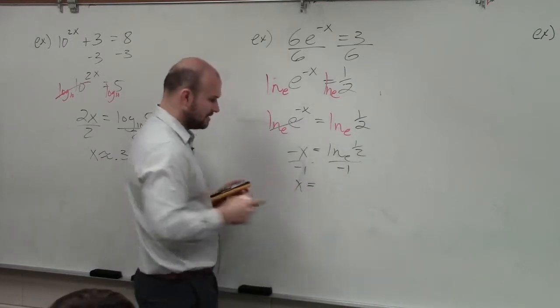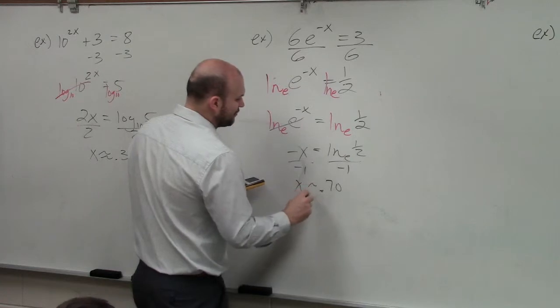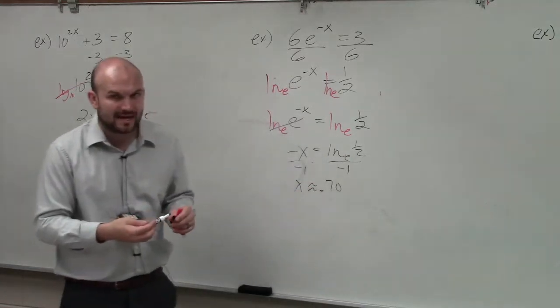So, therefore, x equals a positive 0.70. And again, that's going to be approximate, as I did round my answer. Okay?